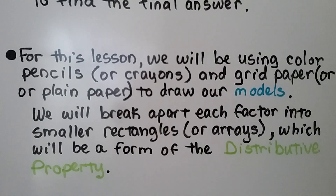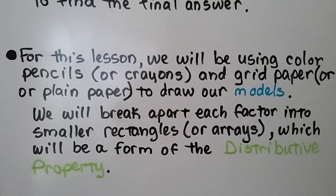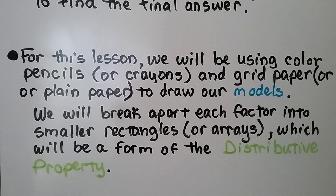For this lesson, we'll be using colored pencils or crayons and grid paper or plain paper to draw our models, and we will break apart each factor into smaller rectangles or arrays, which will be a form of the distributive property.